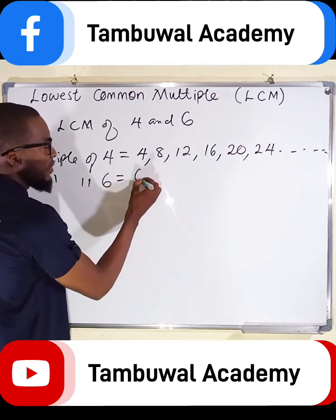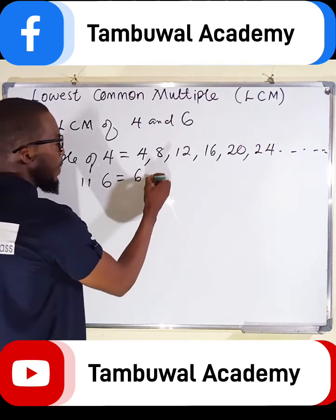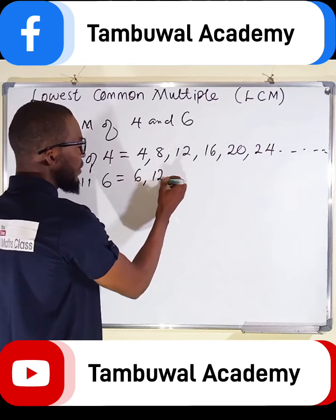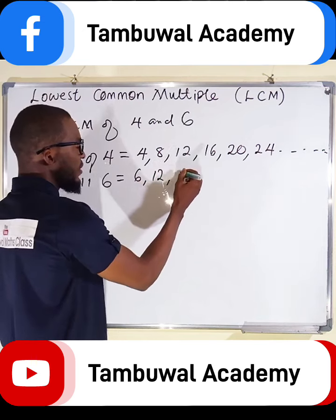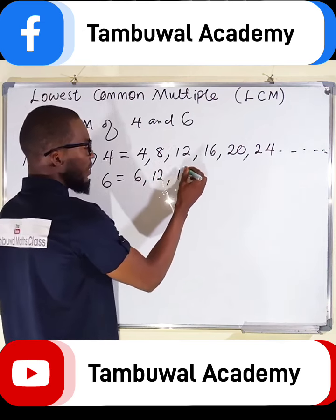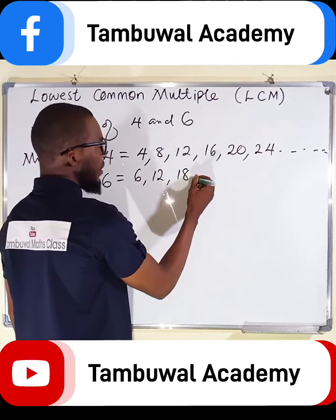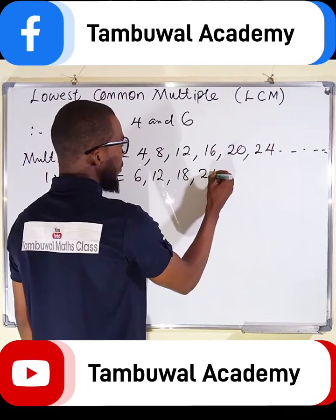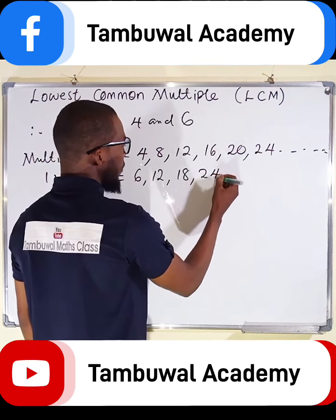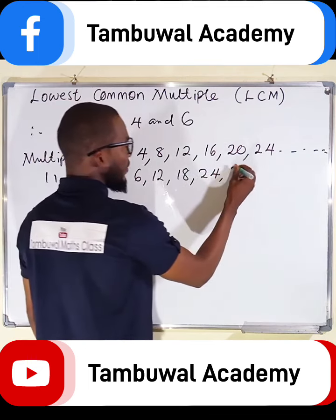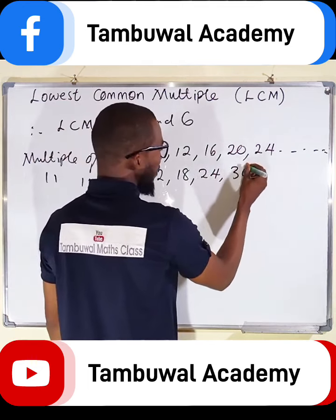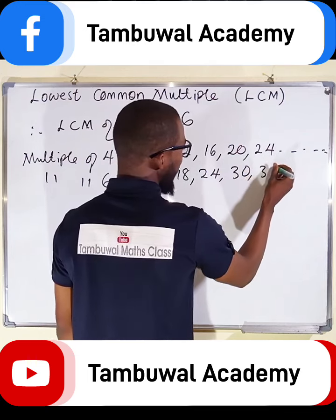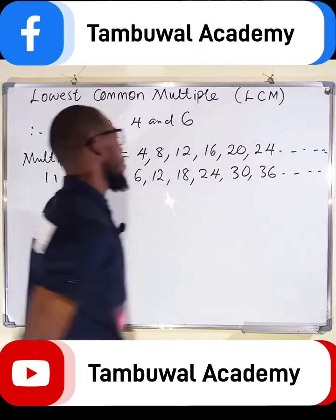Multiples of six: six times one is six, six times two is twelve, six times three is eighteen, six times four is twenty-four, six times five is thirty, six times six is thirty-six. We can stop here.